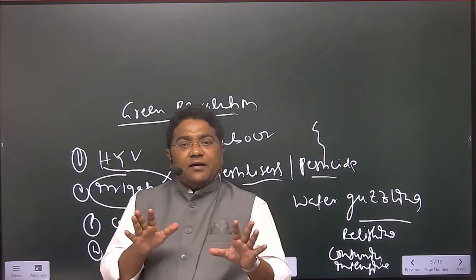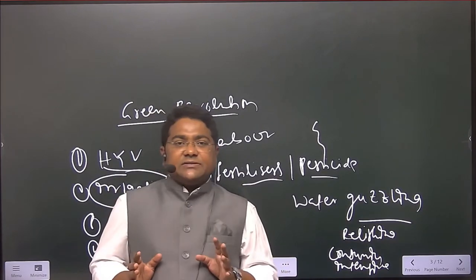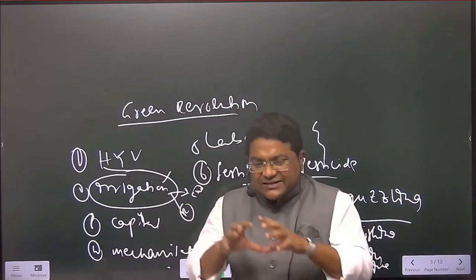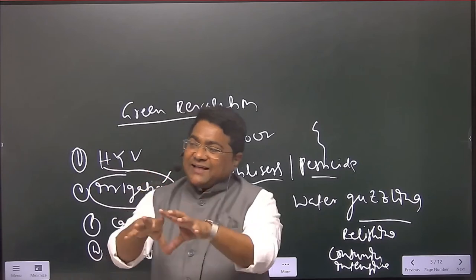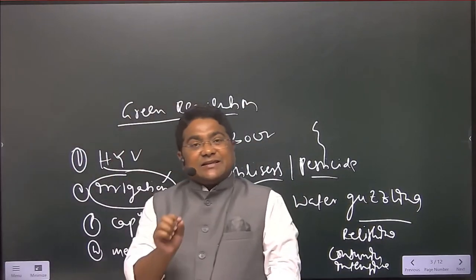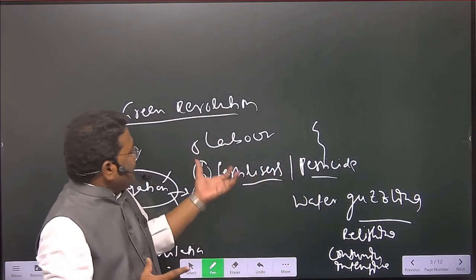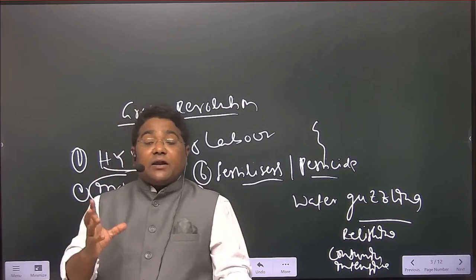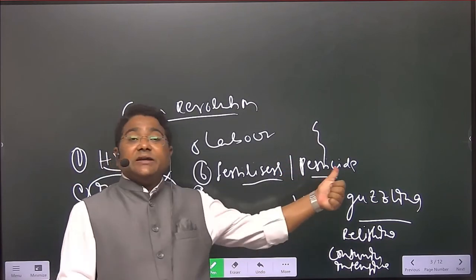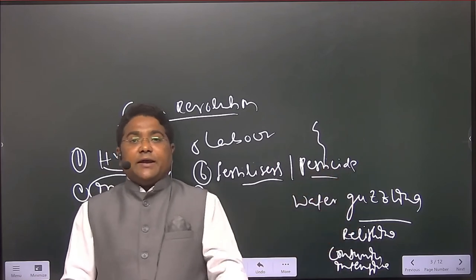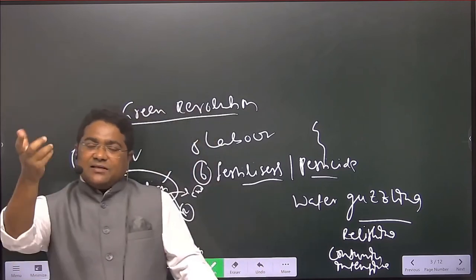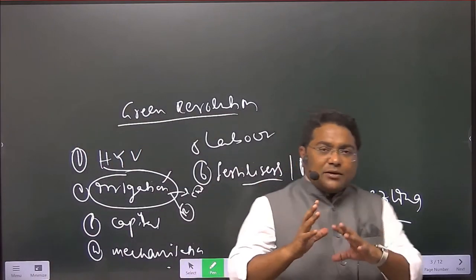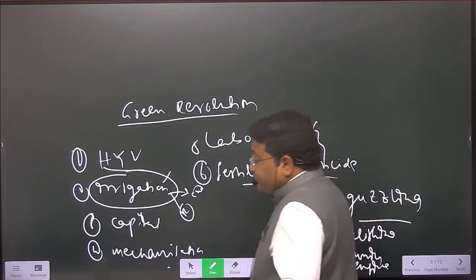This green revolution was so successful because it was mobilized, capitalized, and supported by the government of India. It accomplished food security in rice, wheat, and other food grains — but it neglected pulses and other things. We will be learning about the achievements, problems, and negative aspects. This is only a brief introduction about the green revolution.